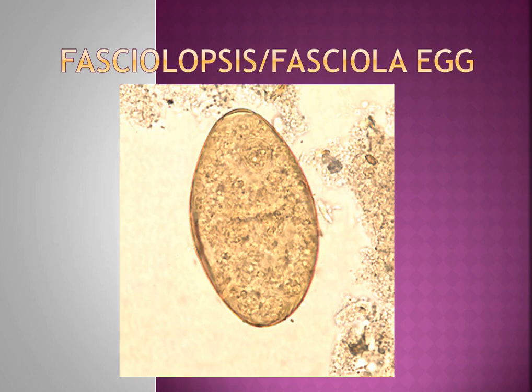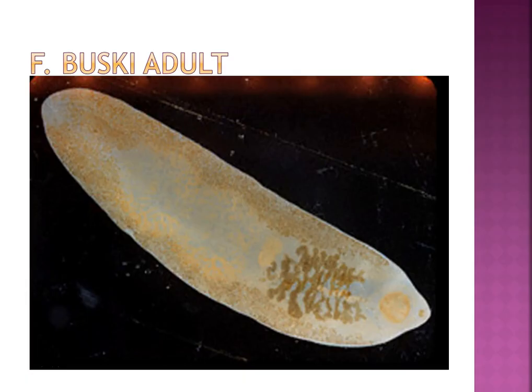Fasciola buski and F. hepatica eggs are almost indistinguishable — both are large with an operculum (cap-like lid). F. hepatica has shoulders; buski doesn't. Buski is the giant intestinal fluke. F. hepatica is the sheep liver fluke — its natural host is the sheep. Hepatica resides in the bile duct; buski in the small intestines. Buski can mimic an ulcer, so patients and doctors may think they have peptic ulcer disease.